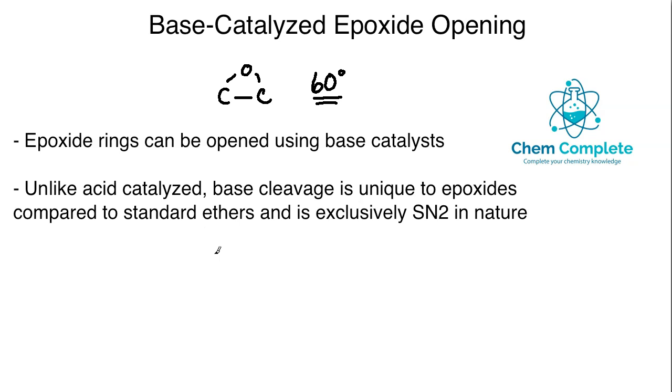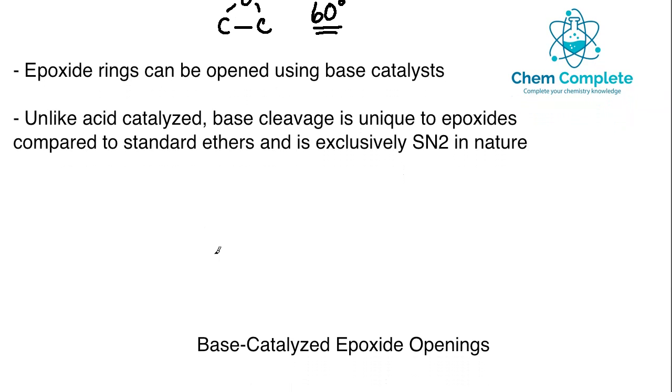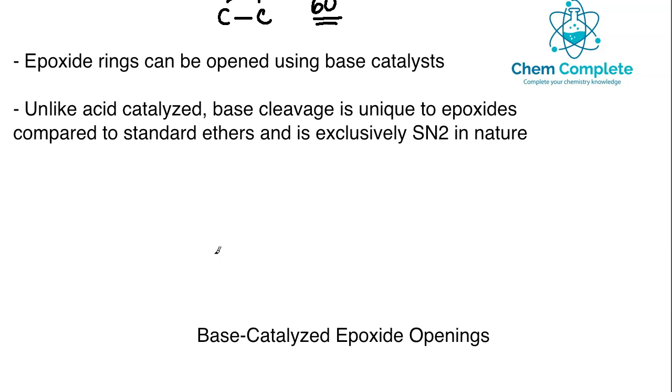Unlike the acid-catalyzed reactions for epoxides, base-catalyzed reactions are going to be an exclusive SN2 type of result. If you remember back from the acid-catalyzed, we had a mixture depending on the substitution patterns around the epoxide where primary and secondary would give rise to SN2 type behavior, and if there was a tertiary site it would give rise to SN1 type behavior.